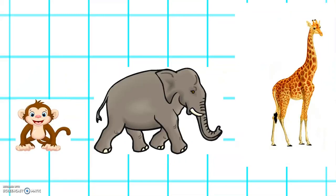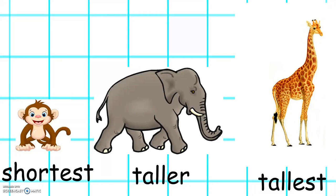We can use some words to describe the height of the animals. The giraffe is the tallest. The elephant is taller than the monkey. The monkey is the shortest.